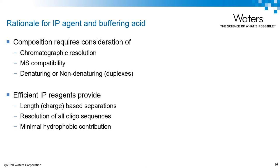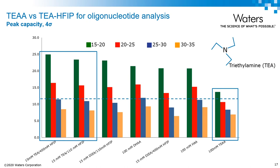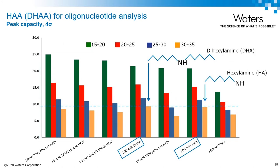Now let's consider some applications where an alternative ion pairing system may be more suitable based on your application. From our earlier discussion, we focused on TEAA as a traditional approach and TEA-HFIP as the MS-friendly buffer system. In this example, the same oligonucleotide standard—the poly-T ladder—was used to investigate peak capacity across a variety of buffer systems. Comparing TEAA to two different HFIP concentrations, it's clear that HFIP has greater peak capacity across oligos of all lengths. When using hexylamine or dihexylamine as the ion pairing agent, there was a slight improvement in peak capacity for the 30 to 35 mer species, which led us to ask: can this effect be further exploited when working with larger oligos?